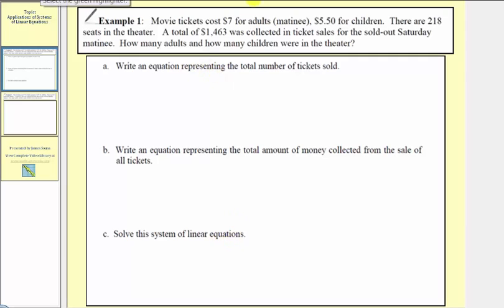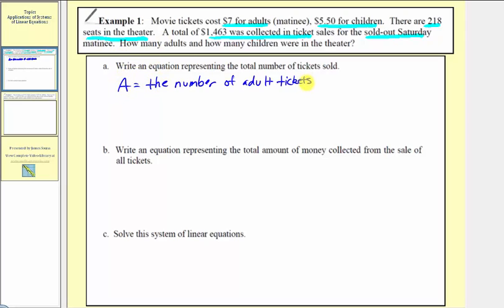Let's highlight the important information. Adult tickets cost seven dollars each, children's tickets cost five dollars fifty cents each, there are 218 seats in the theater, a total of one thousand four hundred sixty three dollars was collected, and the theater was sold out. There are two unknowns: we don't know how many adult tickets or children's tickets were sold. Let's use A for the number of adult tickets and C for the number of children's tickets.